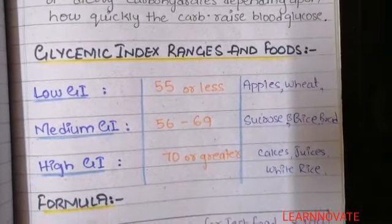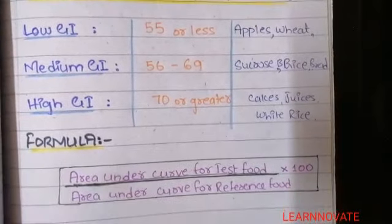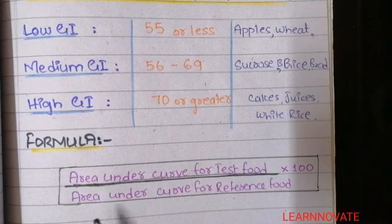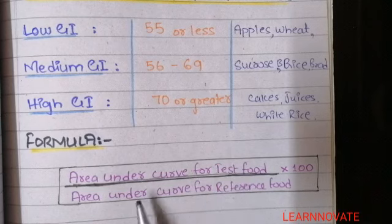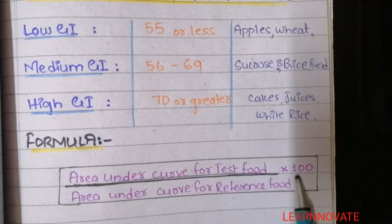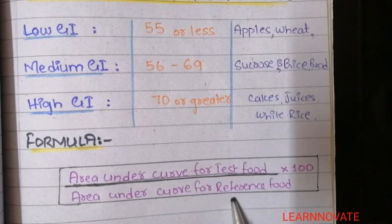Now, coming to the formula used to find the glycemic index in the laboratory. We use a graph plotted against a reference sugar and a test sugar to calculate the glycemic index. The formula is: the area under the curve for the test sugar divided by the area under the curve for the reference sugar, multiplied by 100. This is the formula for glycemic index.